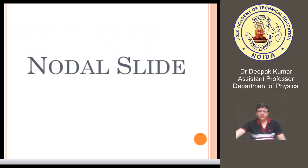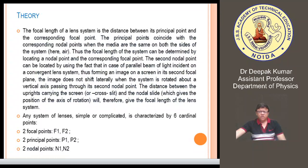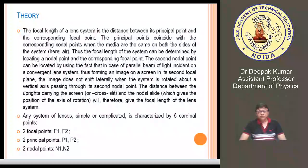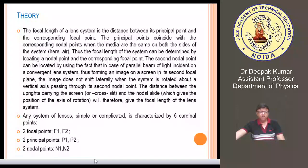This is termed as the nodal slide. We know that the focal length of a lens system is the distance between its principal point and the corresponding focal point. The principal point coincides with the corresponding nodal points when the media on both sides of the system are the same. The focal length of the system can be found by locating a nodal point and the corresponding focal point. In a lens system there can be different focal points, different principal points, and different nodal points — our aim is to find the six combinations of these points, which are termed as cardinal points.